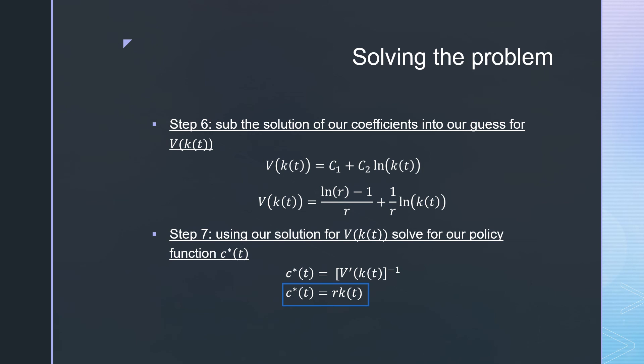From there we move to step seven and use that solution to solve for our optimal policy function. Remember, we said our policy function is defined by c(t) equals the inverse of V'(kt). If we take the derivative of that, it's just 1/(r*kt), and the inverse of that just flips it to r*kt. So that's what we have here.